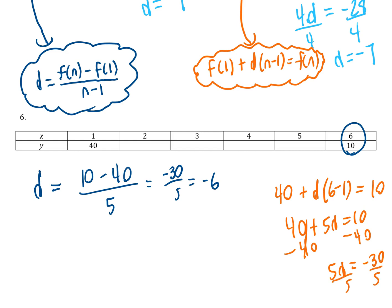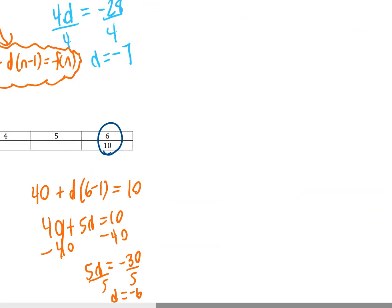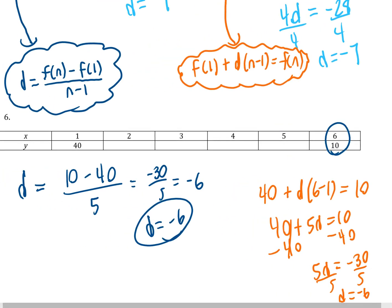From that we can start at 40. Notice they both got the same answer, negative 6. So we can decrease by 6 every time: 40 minus 6 is 34, 34 minus 6 is 28, 28 minus 6 is 22, 22 minus 6 is 16, and 16 minus 6 is 10.